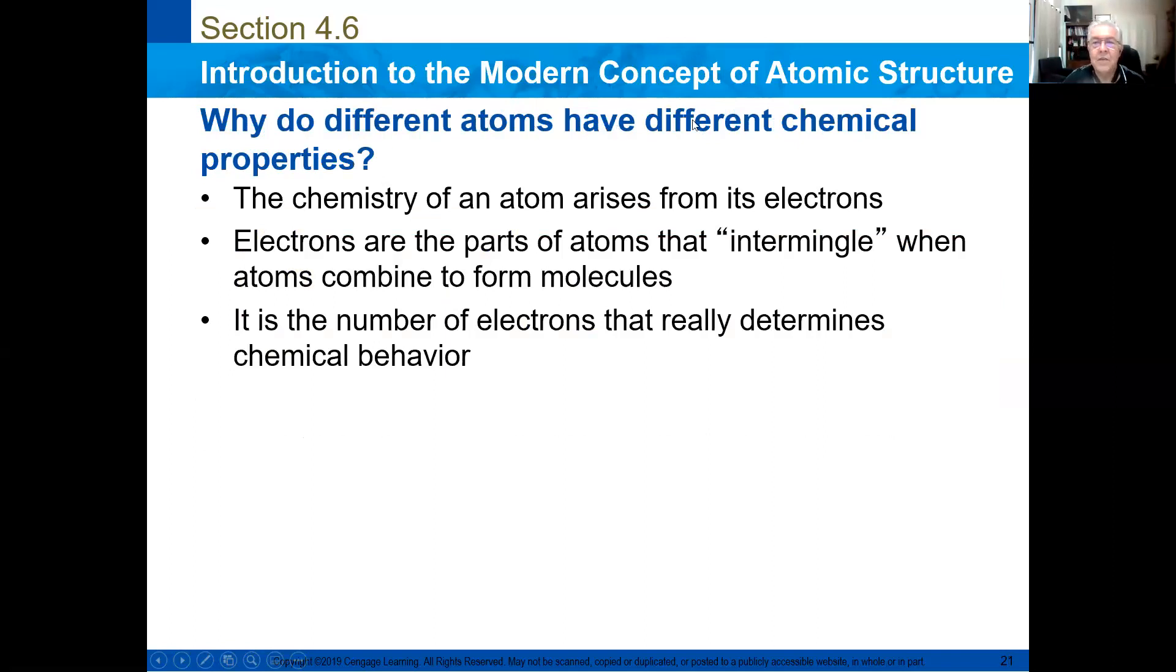Why do different atoms have different chemical properties? Well, the chemistry of an atom arises from its electrons. Electrons are the parts of the atoms that combine or interact with other atoms to make molecules. It is the number of electrons that really determines the chemical behavior. Then, remember, electrons, and especially a group of electrons that I will speak about later, are the ones that determine the chemical behavior.